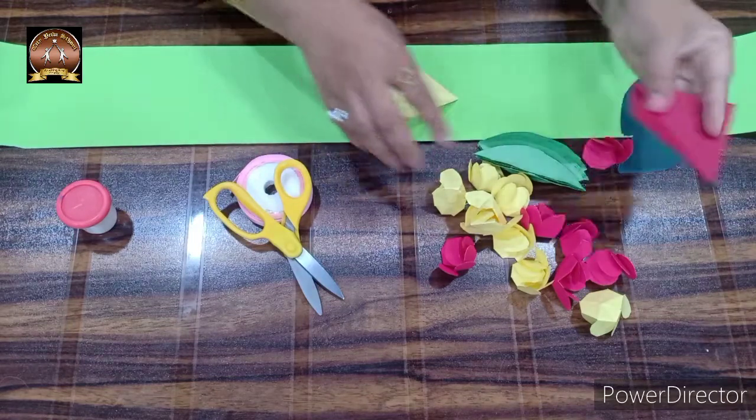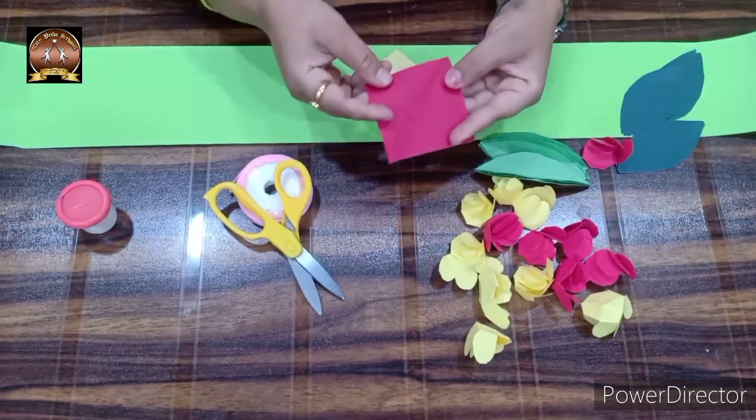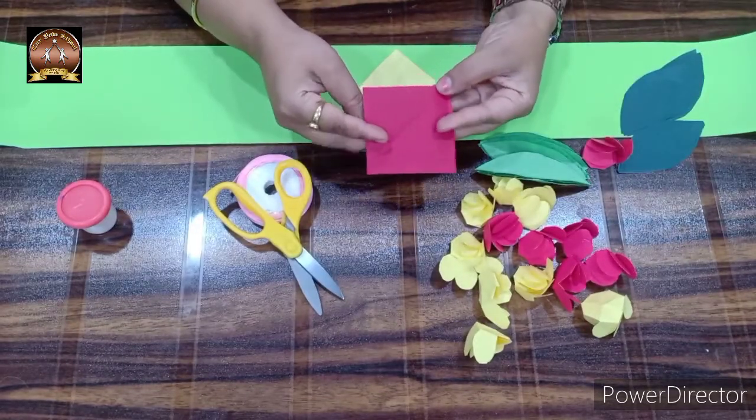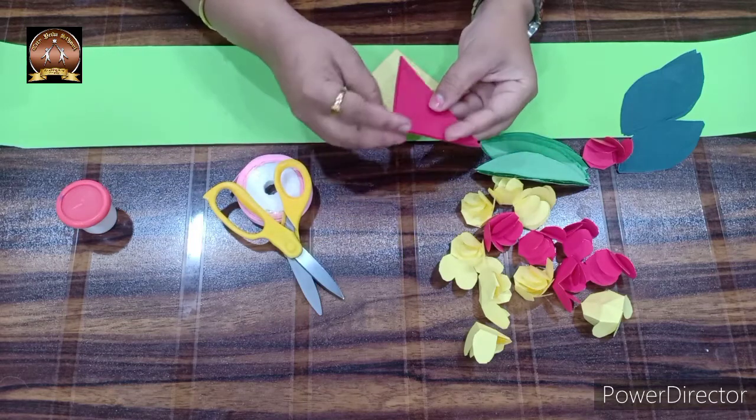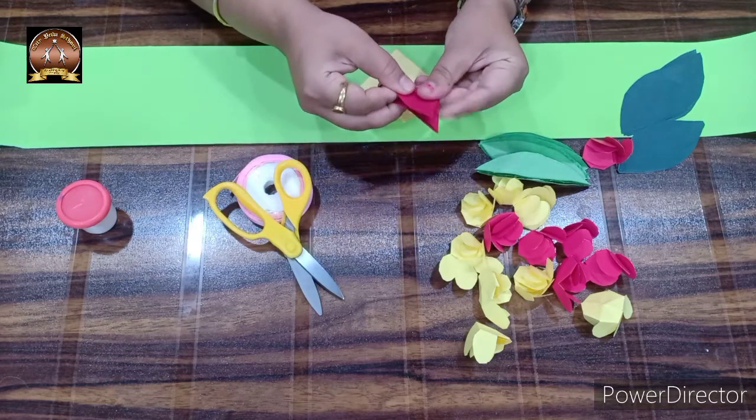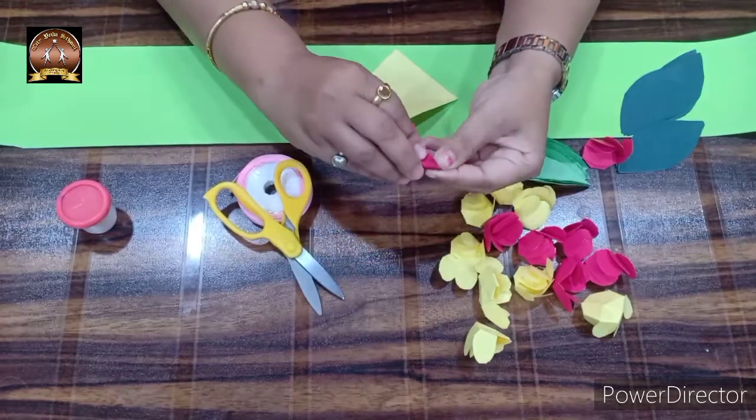Now children, first we are going to make flowers for the toran. Take your square paper and fold it like this. Then fold it in the middle again.